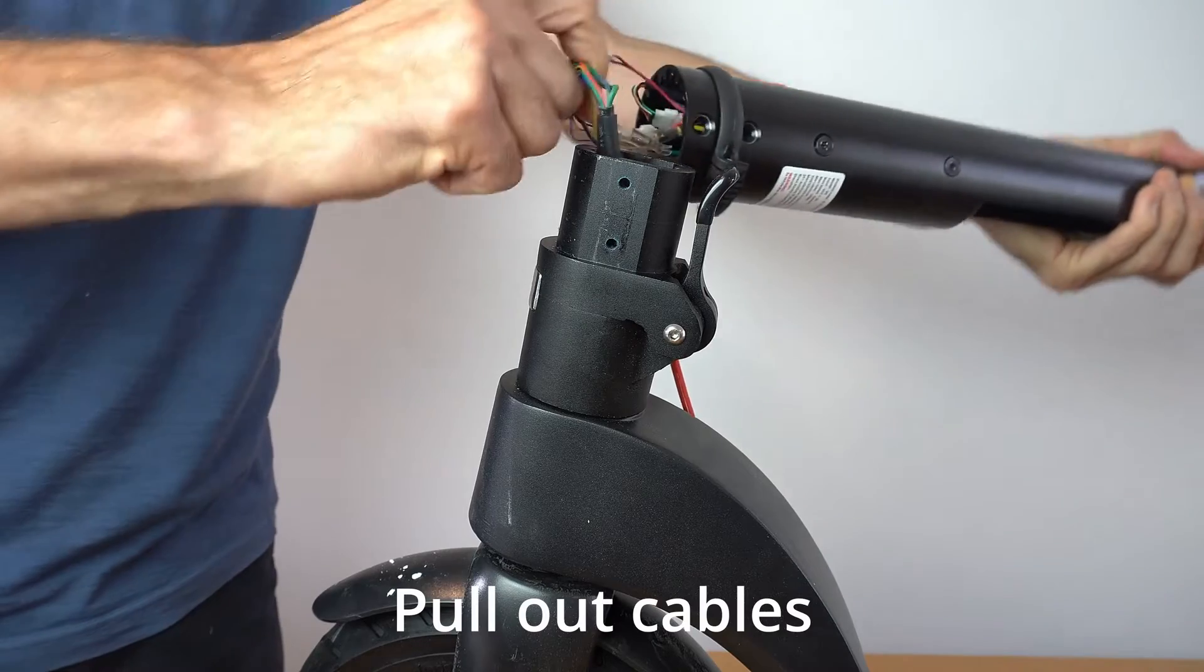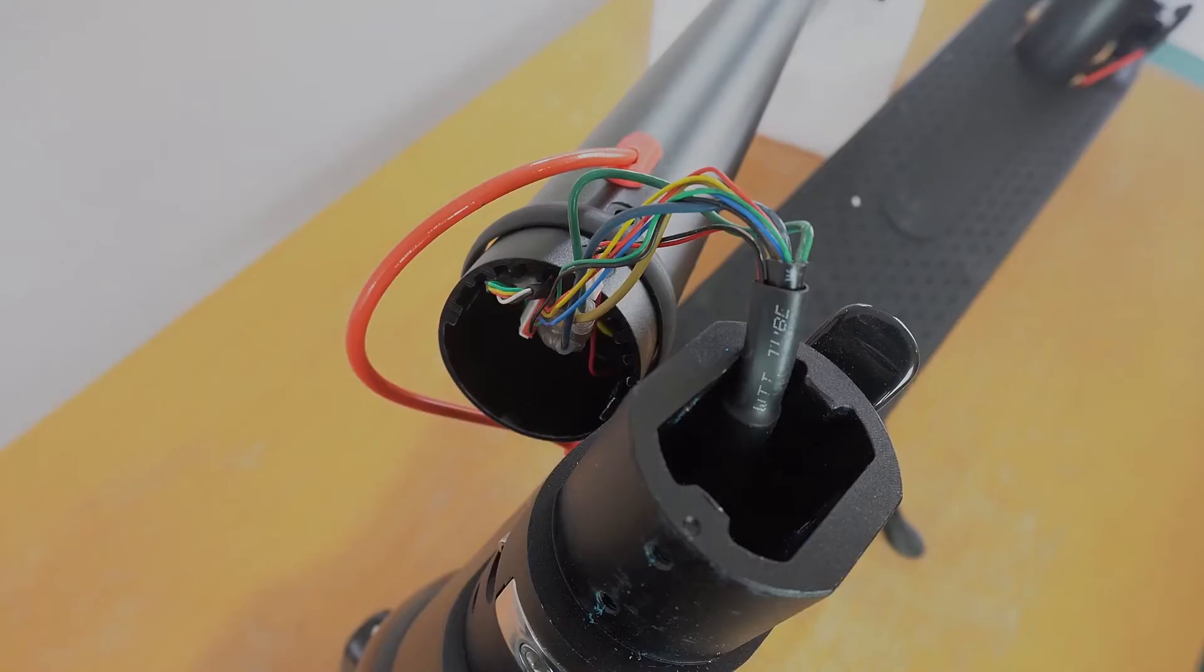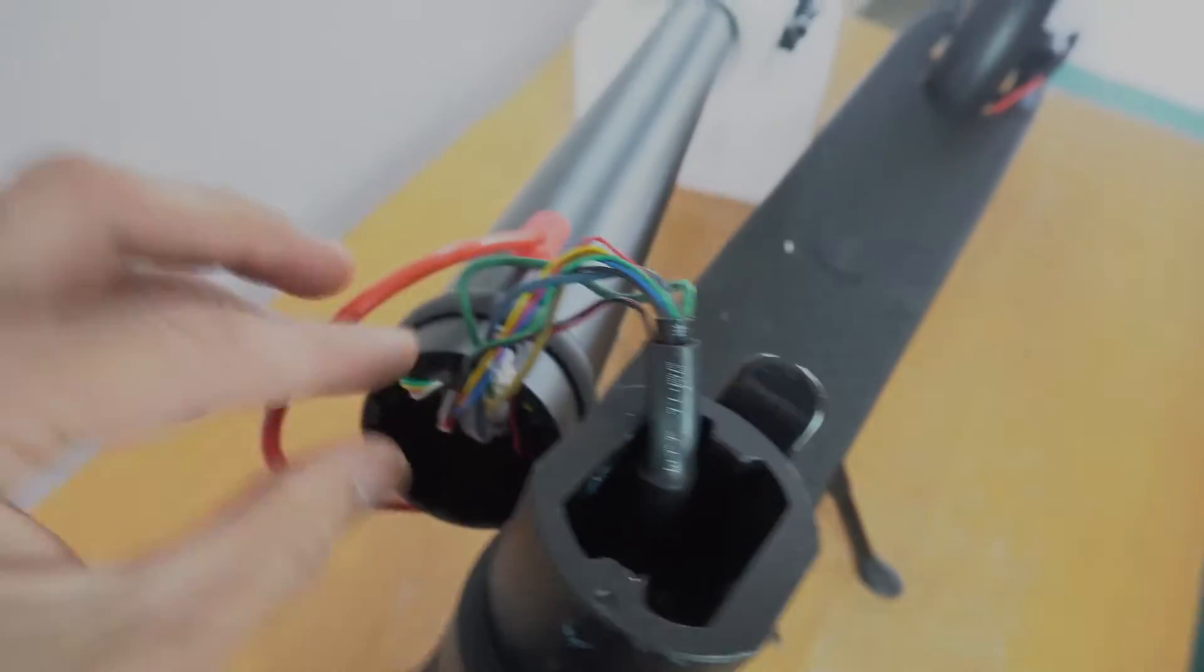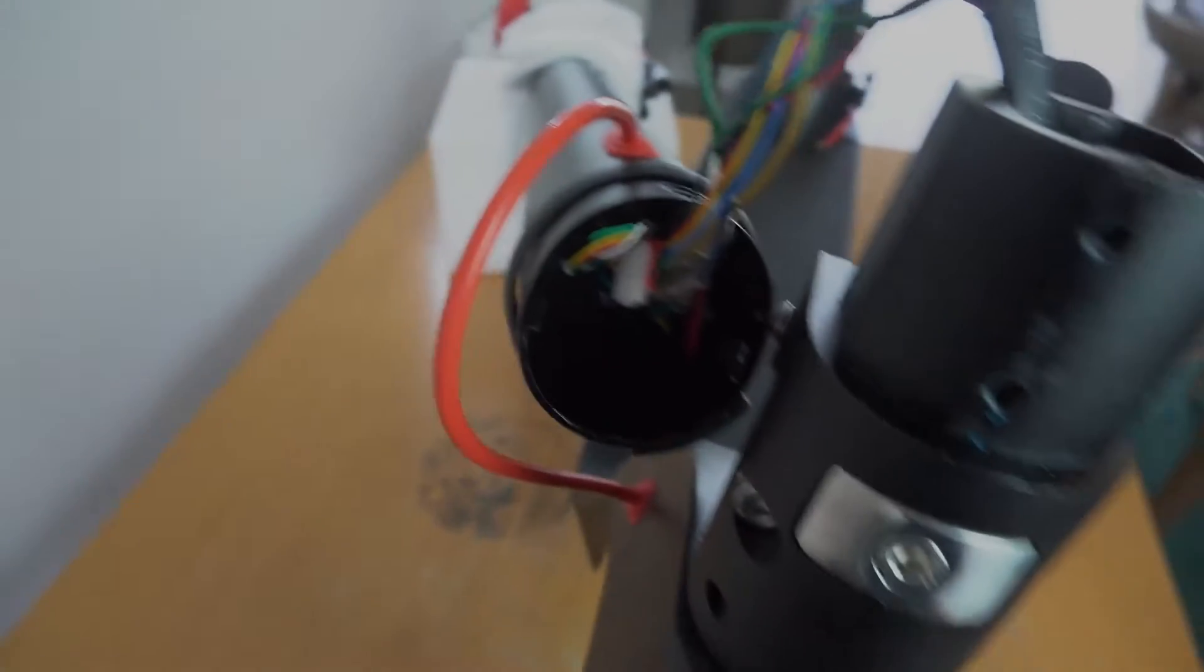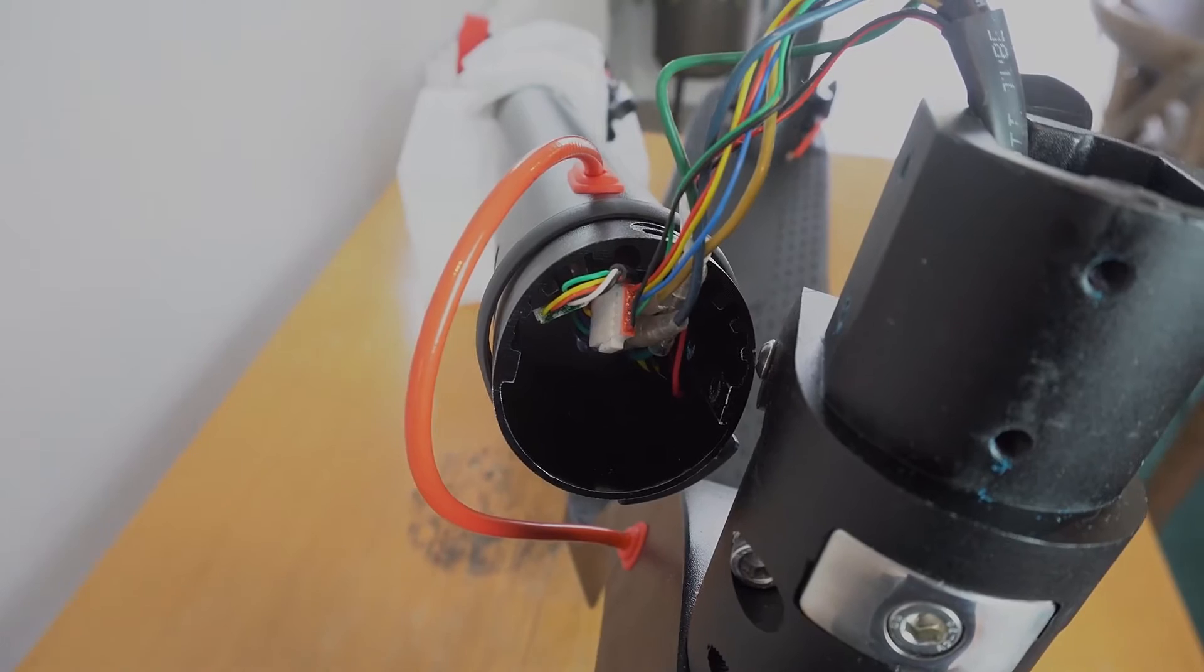You can then ease out the cables that are connected to the controller from the motor. The cable is coming up from the motor and the rear light to the controller, and there's also a cable that runs from the throttle and display unit to the base of the controller.